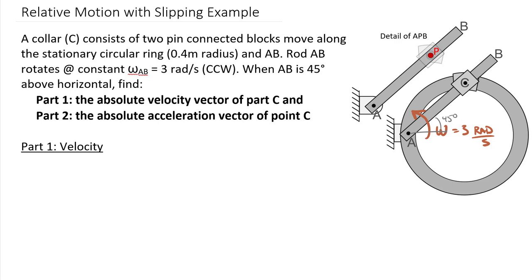One additional thing to note — which won't affect us too much for velocities but we'll state it here — is that we have a constant 3 radians per second. What that tells us is that there's going to be no angular acceleration of body APB. Let's write our equation now with these relative velocity equations with slipping bodies.